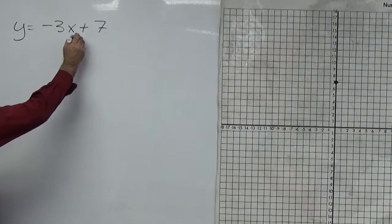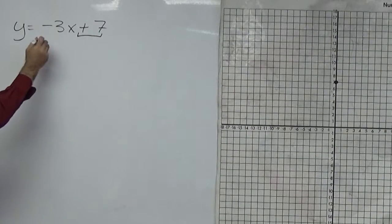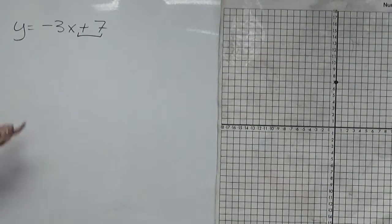So you start at that number, at positive 7. And this number over here, it's supposed to be a fraction, but I don't see the fraction, so what do I do? Oh, I'll put it over 1.